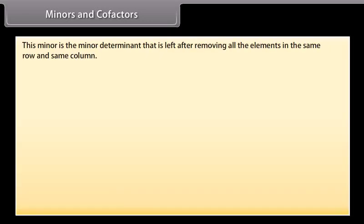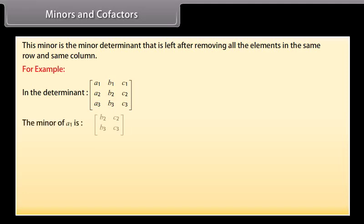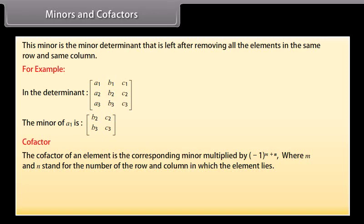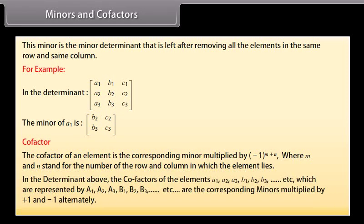Minors and cofactors: the minor of an element is the minor determinant left after removing all the elements in the same row and same column. The cofactor of an element is the corresponding minor multiplied by minus 1 raised to the power m plus n, where m and n stand for the number of the row and column in which the element lies. The cofactors of the elements a1, a2, a3, b1, b2, b3 and so on are the corresponding minors multiplied by plus 1 and minus 1 alternately.